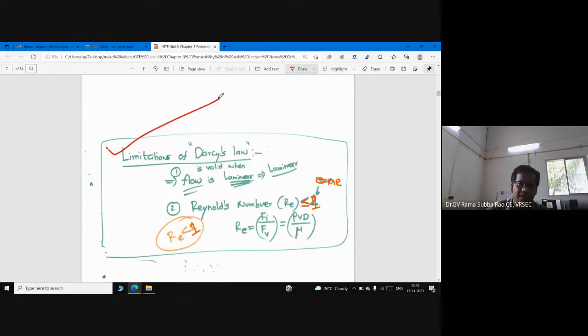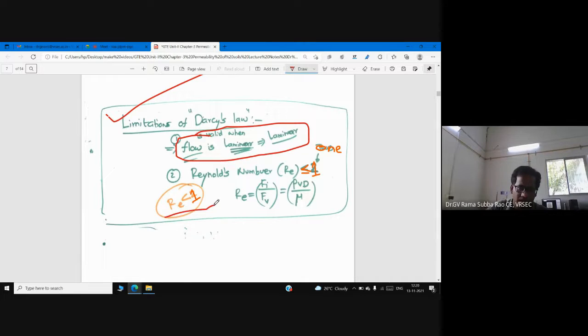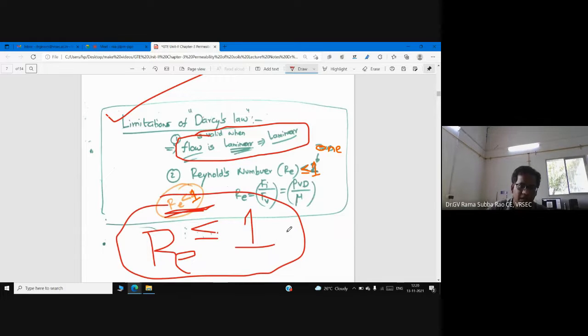Now we are trying to say the biggest limitation of Darcy's law is the flow should be laminar and steady. This we can ensure by knowing Reynolds number. Many of you know Reynolds number is inertia force by viscous force. It should be less than or equal to one. I am very sure what I'm telling - flow through soils, not flow through pipes. For flow through pipes it's less than or equal to two thousand, but I'm telling here flow through soils, permeability of soils, where the Reynolds number should be less than or equal to one.